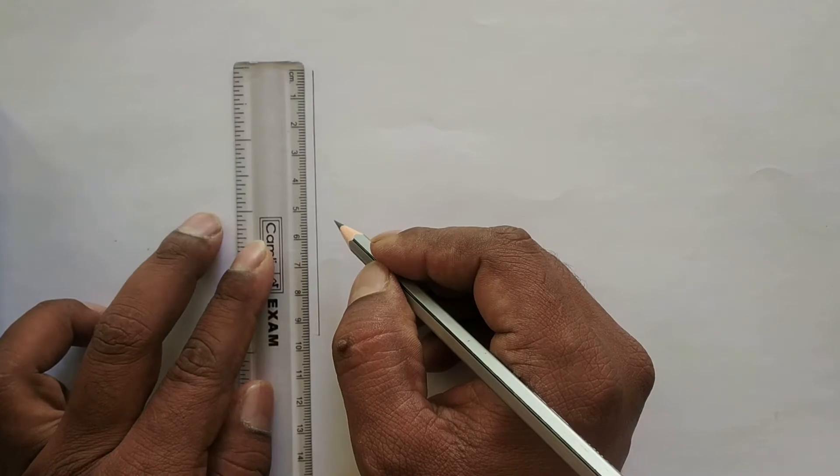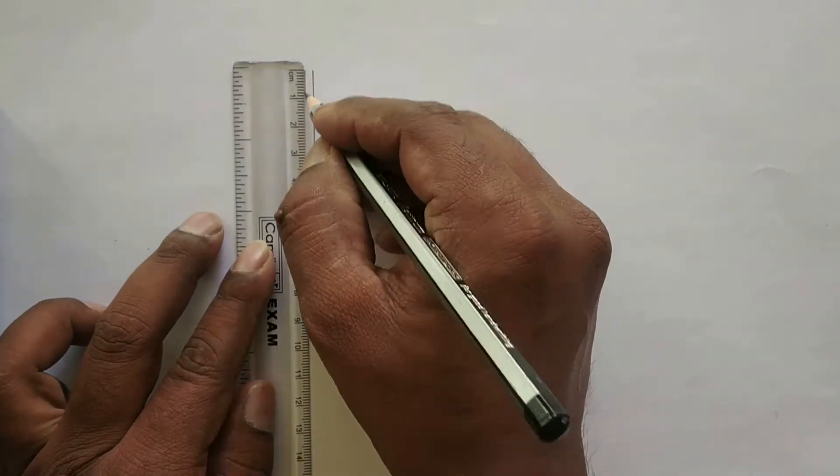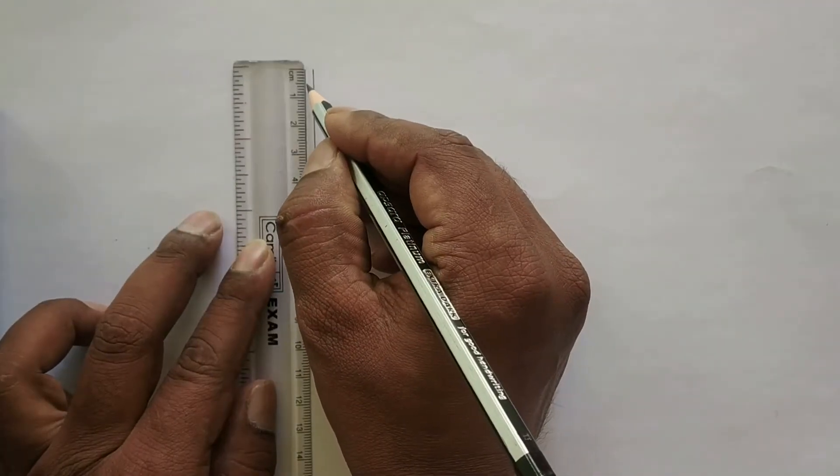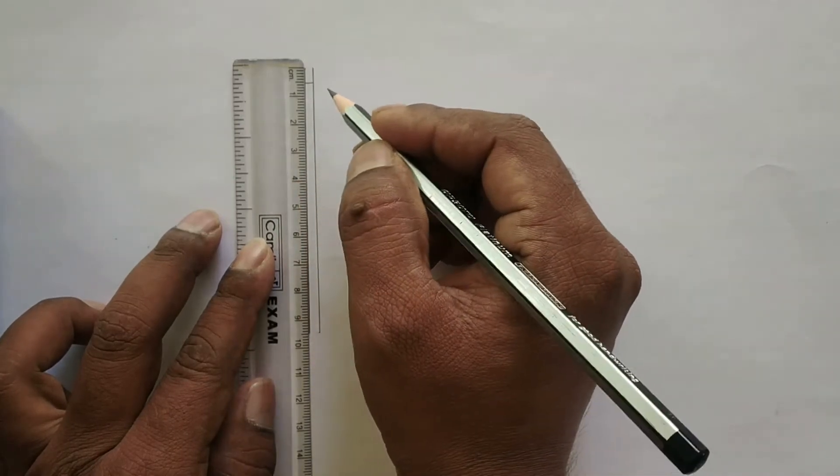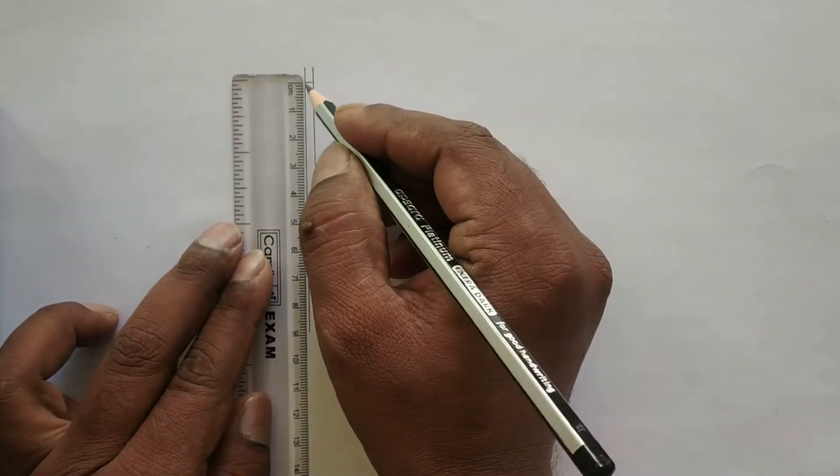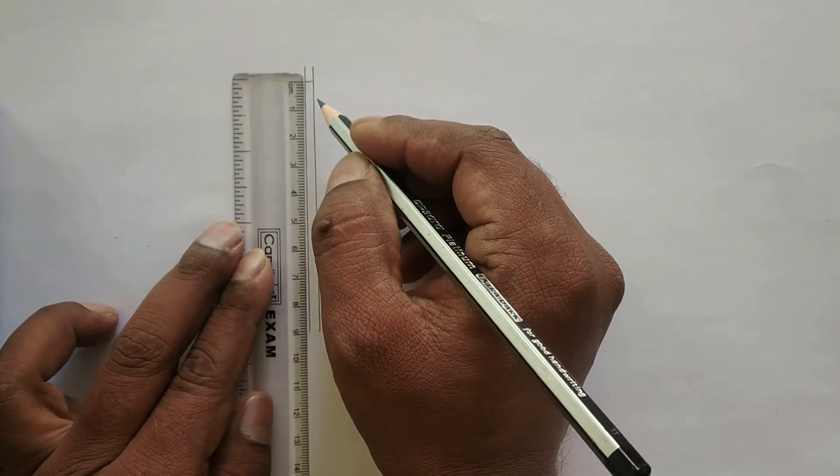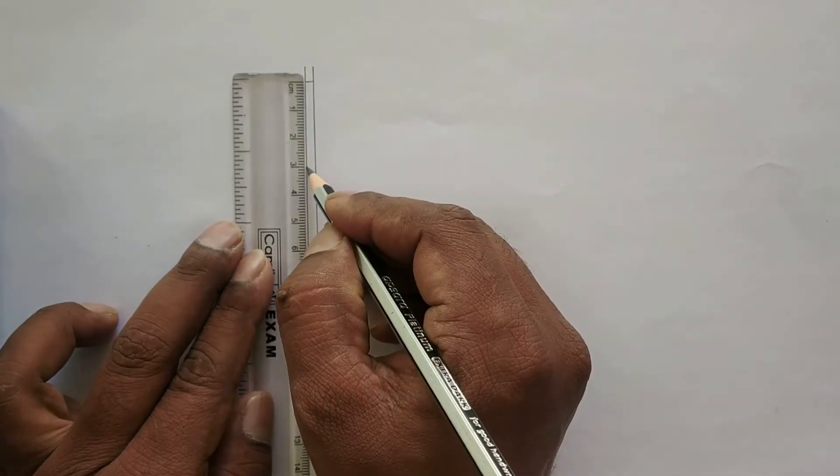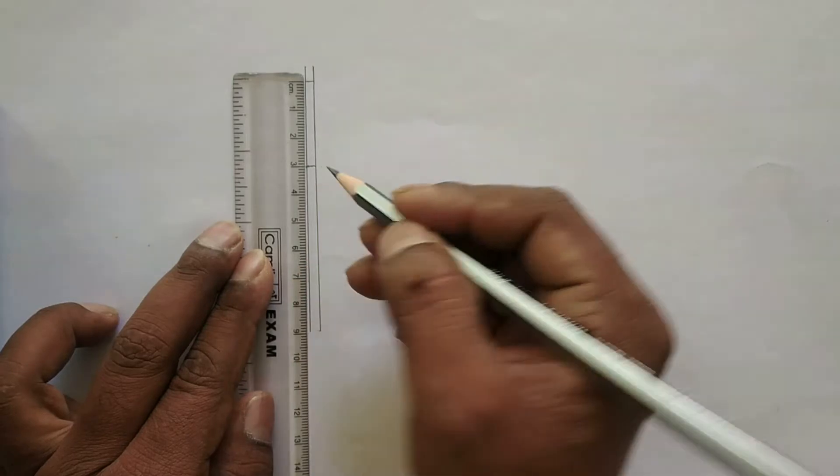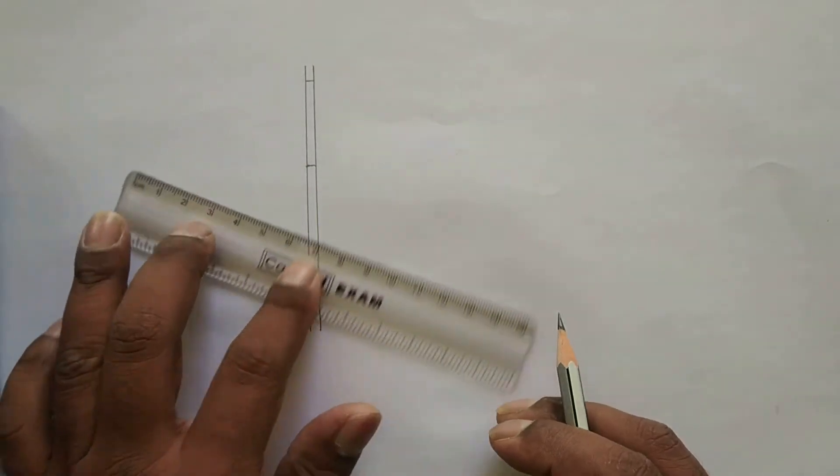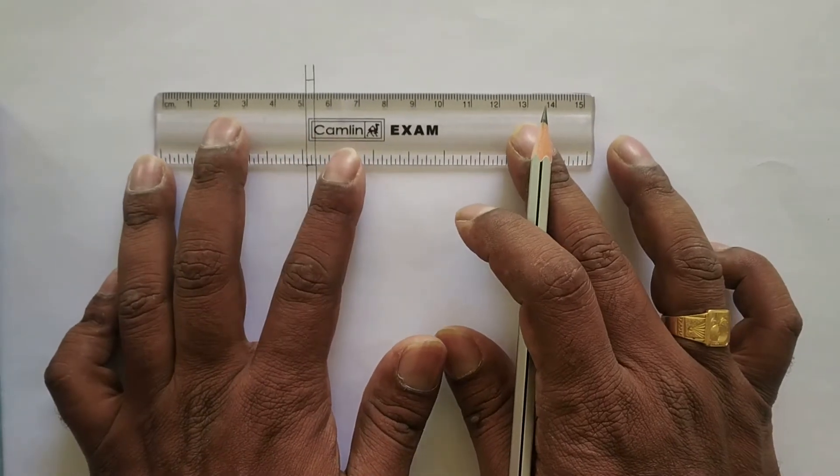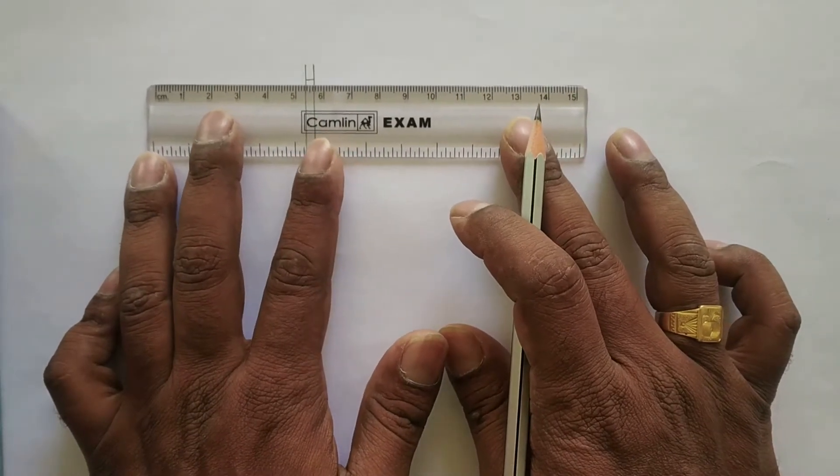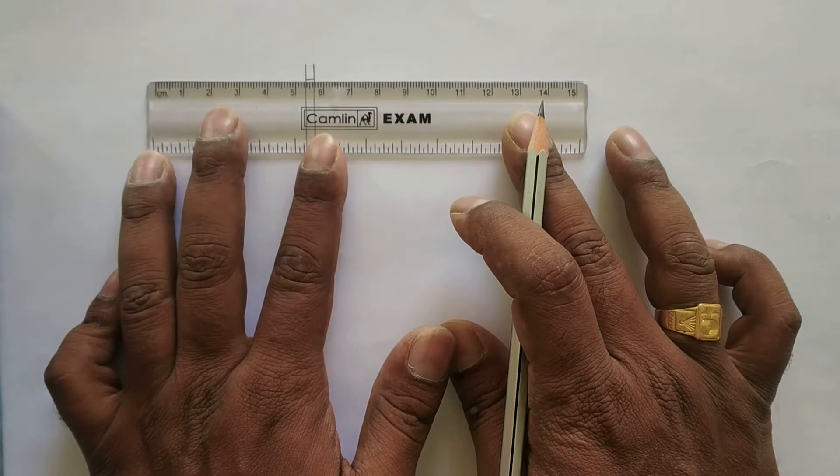Draw another line parallel to this. Mark 0.5 from the top of this line, then from that point mark 3 centimeter. Now you have to draw two magnetic poles on either side, so keep 5.5 at the middle.